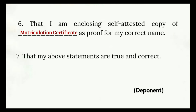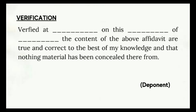In the deponent section, put your signature. On continuation, write the verification: 'Verified at [mention the place] on this [day] of [date], the contents of the above affidavit are true and correct to the best of my knowledge and that nothing material has been concealed therefrom.' In the deponent part again, put your signature below this.